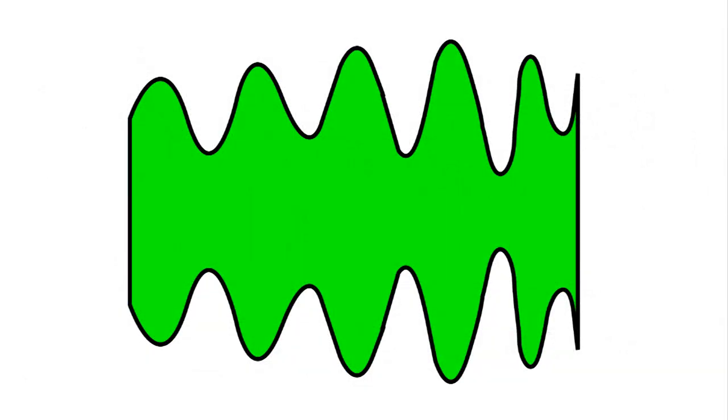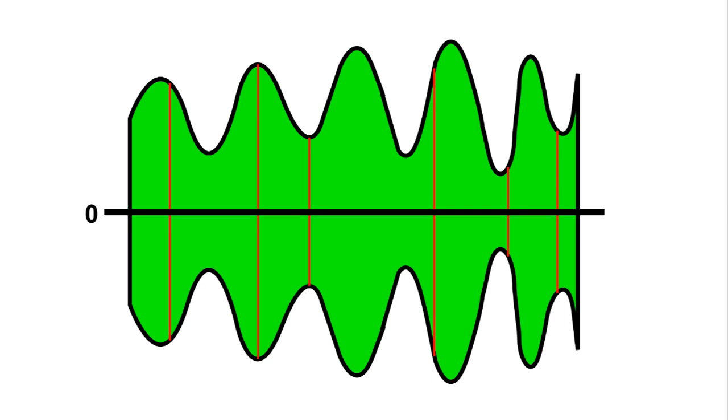To understand what the detector does in this radio, let's draw a line through the center of this modulated carrier and pick some points along that line and draw vertical lines.